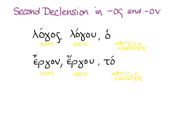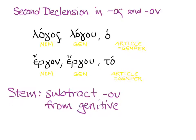We're going to be adding endings to the stem of the words. To get the stem of any noun in the Greek second declension, go to the genitive — the second word — and take off the -ou. With these two words, you'll get the same result if you took the ending off the nominative, but that won't always be the case.